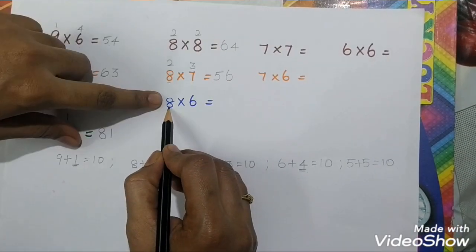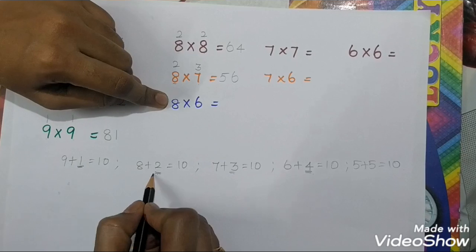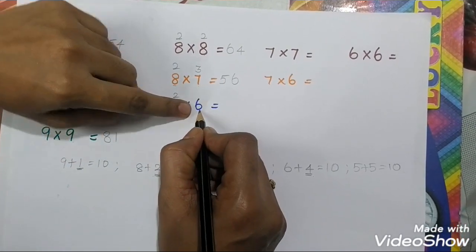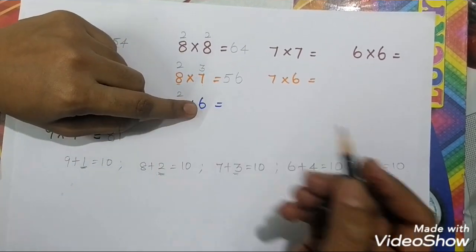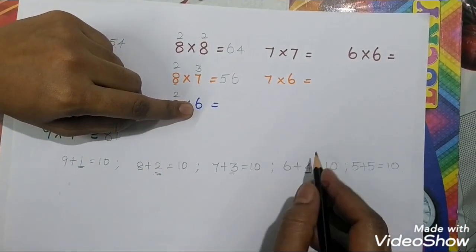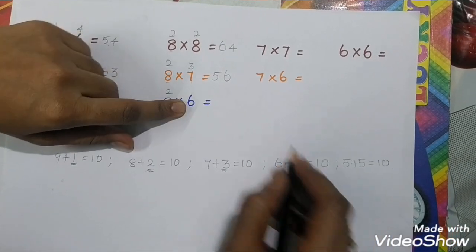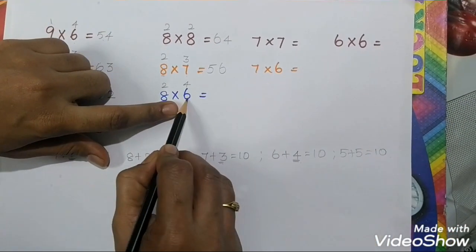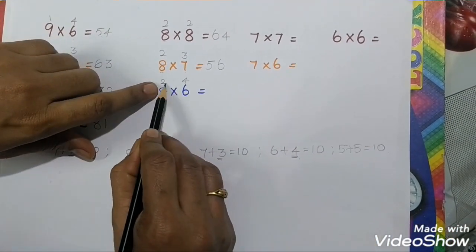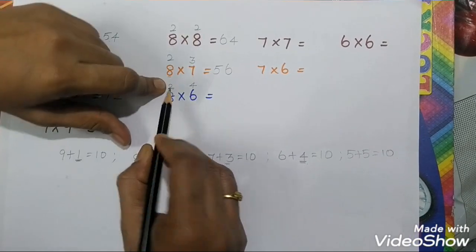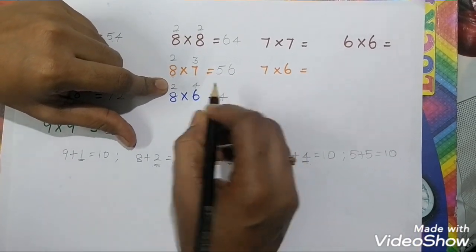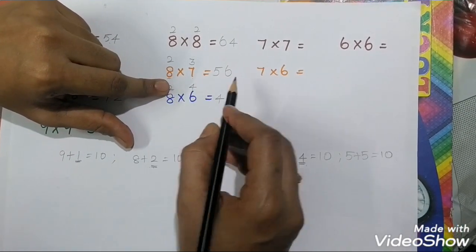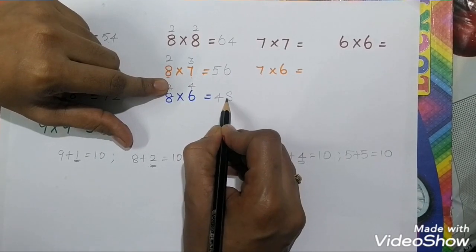For 8 times 6: 7's friend is 3 and 8's friend is 2. Then 6's friend is 4. Cross subtraction: 6 subtract 2 equals 4. Multiply the friends: 2 times 4 equals 8. So 8 times 6 are 48.